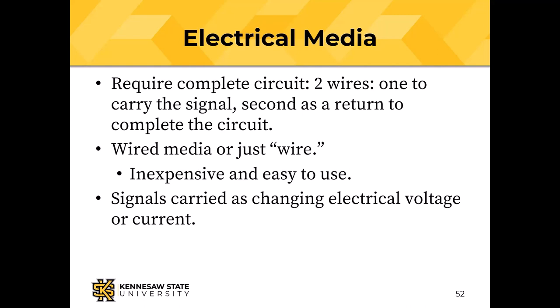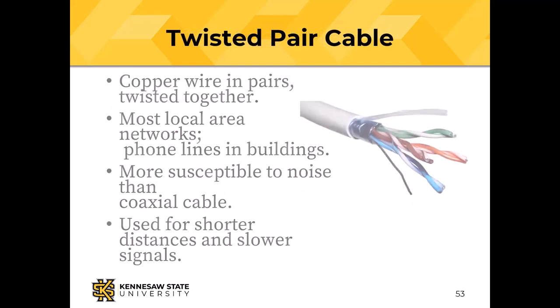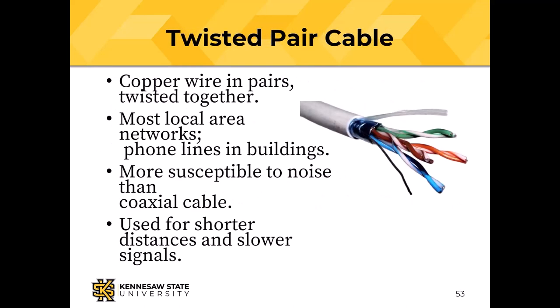Electrical media require two wires to complete a circuit — a wire to carry data and a return. The most common data communication cable for local transmission is twisted pair cable: copper wire in pairs twisted together.